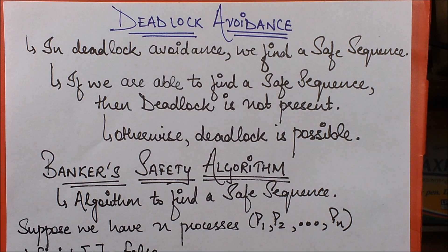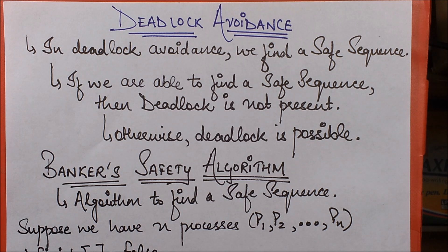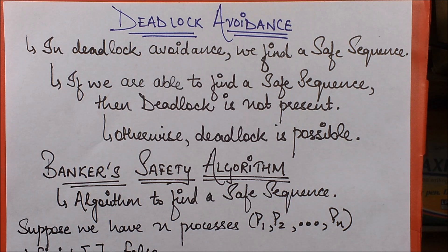In this session, I'm going to take up the topic of deadlock avoidance. In deadlock avoidance, we basically try to avoid deadlock. Whenever there are some processes and resources, we are trying to find some allocation order in which the entire system does not ever get stuck in a deadlock — a situation in which some processes are waiting for other processes and are never able to complete.